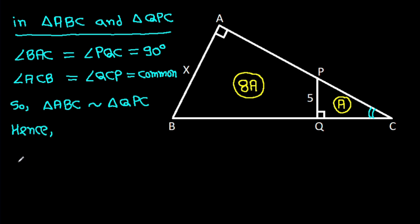Hence, area of ABC over area of QPC will be equal to AB squared over QP squared.